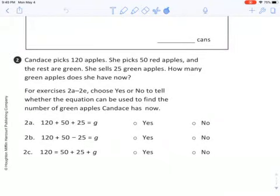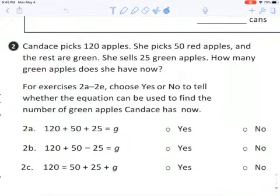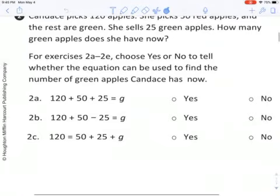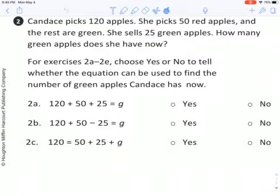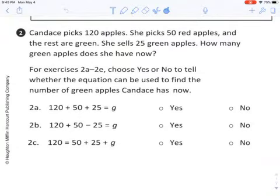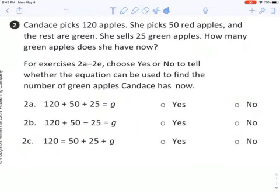Number two, Candace picks 120 apples. She picks 50 red apples and the rest are green. She sells 25 green apples. How many green apples does she have now? So this is a little bit of a typo here. You're going to see it says 2a through 2e. It's only through 2c. So it's really just three problems. Choose yes or no to tell whether the equation can be used to find the number of green apples Candace has now. You're going to need to go back, reread it, and then find out. Does 2a work? 120 plus 50 plus 25 equals g? Yes or no? 2b, 120 plus 50 minus 25 equals g? Yes or no? And 2c, 120 equals 50 plus 25 plus g? Yes or no?